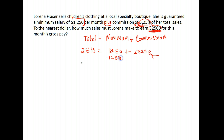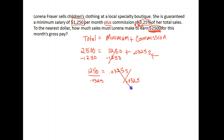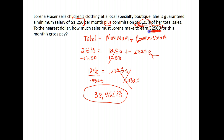We solve for sales using algebra. Subtract $1,250 from both sides, leaving $1,250 equals 0.0325 times sales. Then divide both sides by 0.0325. This gives us sales of $38,461.54. So Lorena's sales would have had to be $38,461.54 in order for her to earn $2,500 in monthly gross pay.